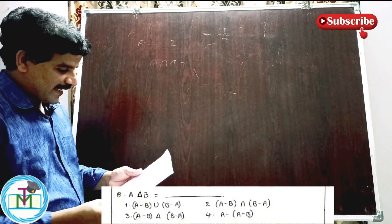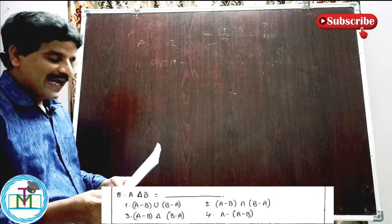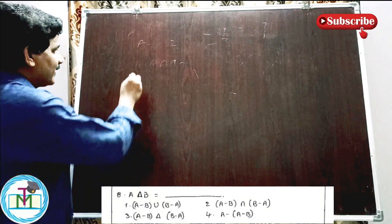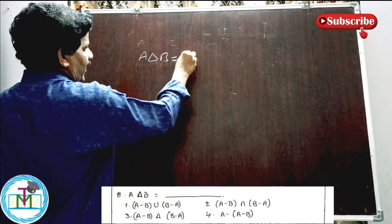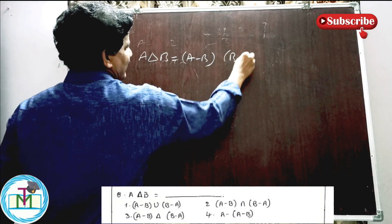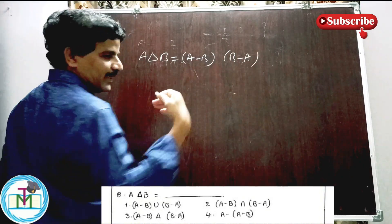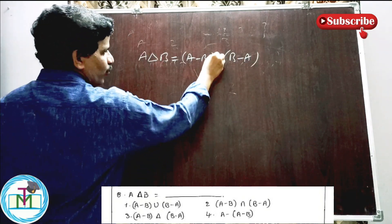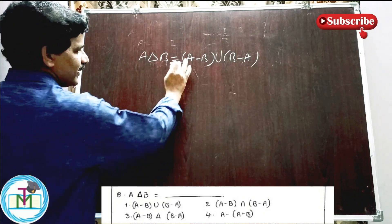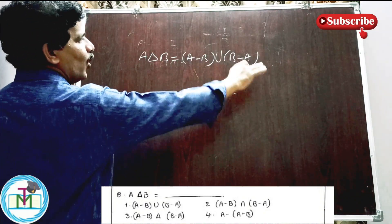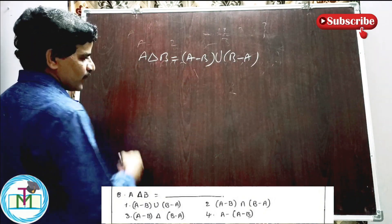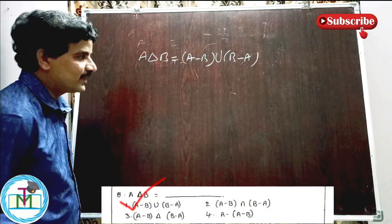Question number eight: standard formula. A delta B is equal to how much? A delta B, the symmetric difference, is equal to (A minus B) union (B minus A). Therefore option 1 is the right answer.